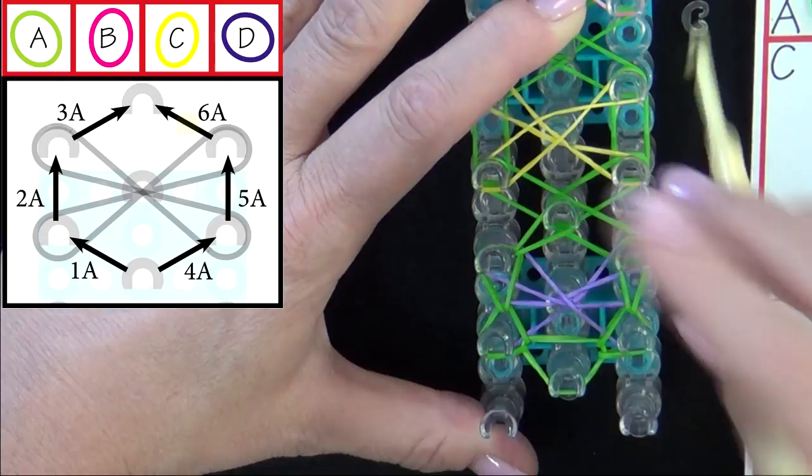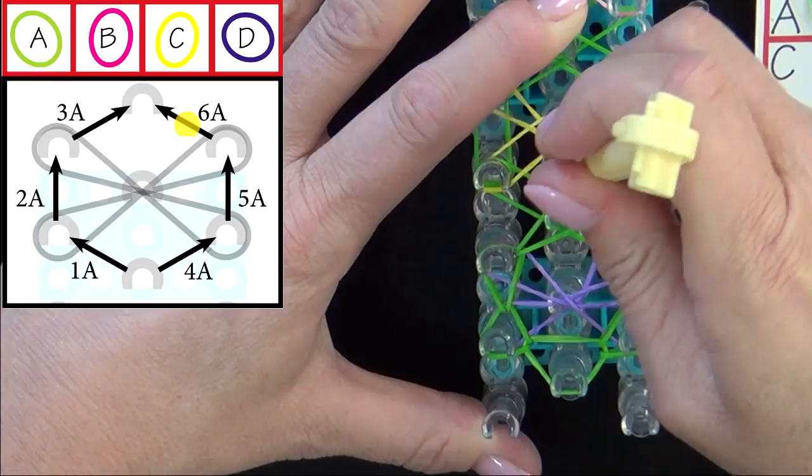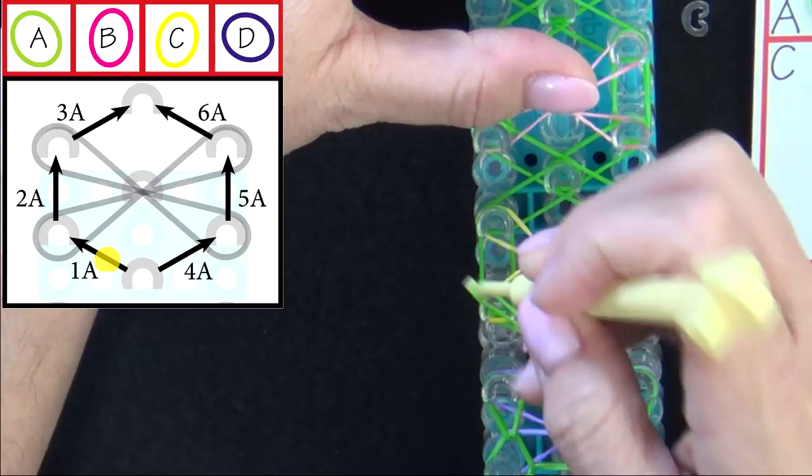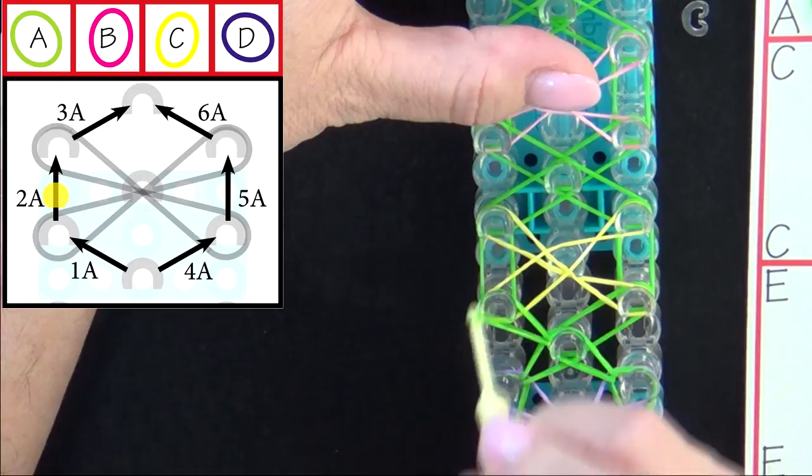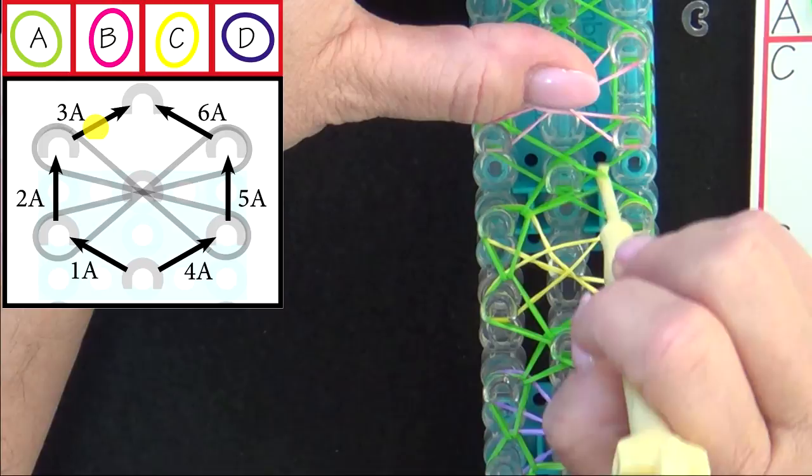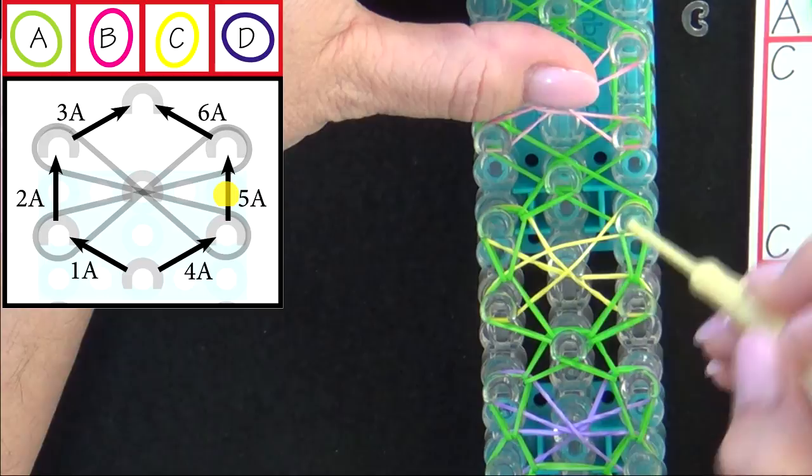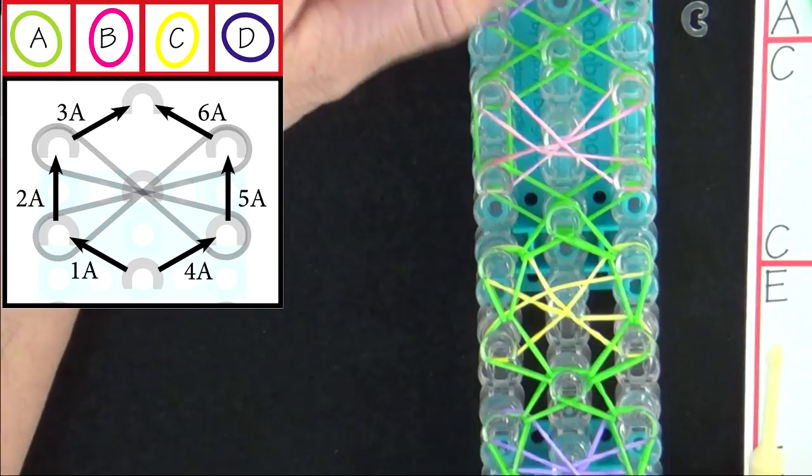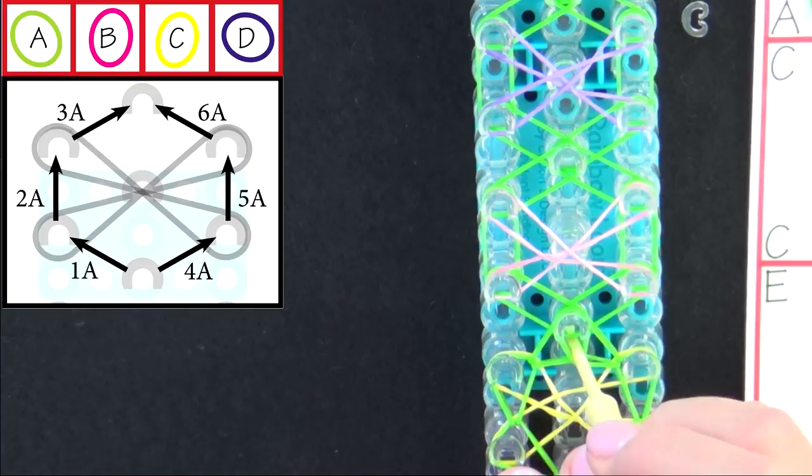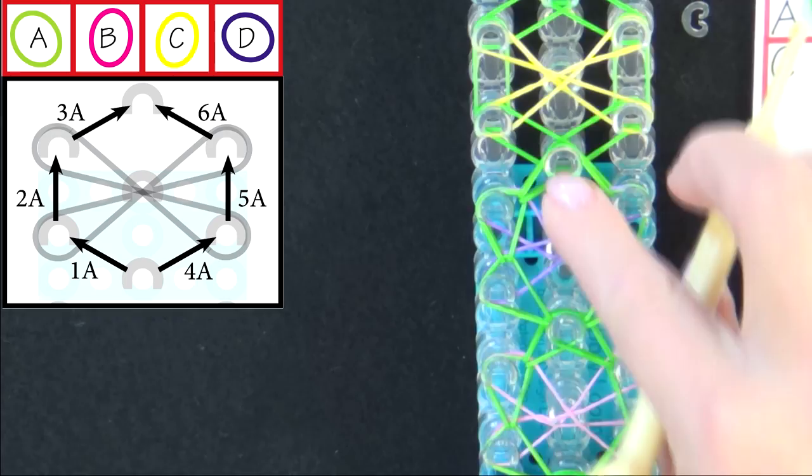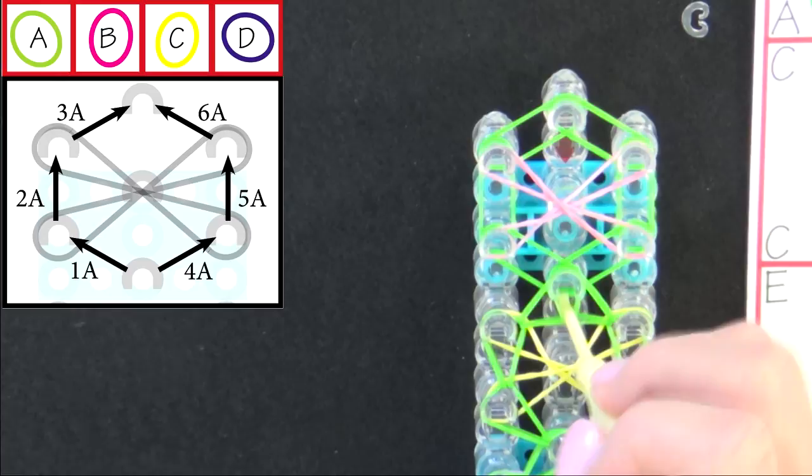6A will be looped to the center, and then we'll repeat this pattern for the next hexagon. 1A, 2A, 3A, 4A, 5A, and 6A. We'll repeat this same pattern for the rest of the hexagons. We'll fast forward from here until we reach the end of the loom.